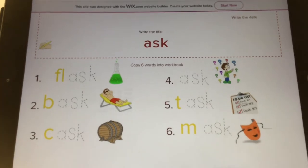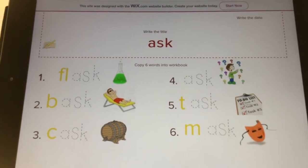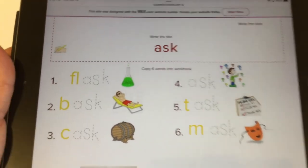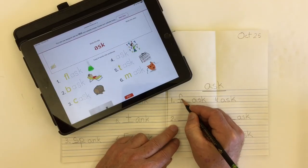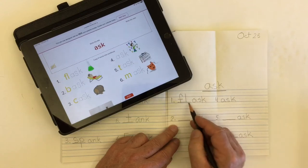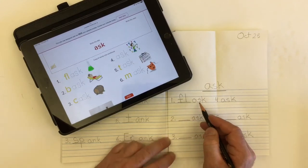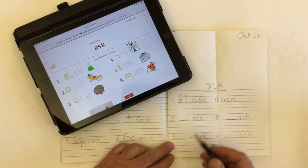Let's copy our words down. Word number one, flask. I need an F-L for flask, a container that holds liquid.